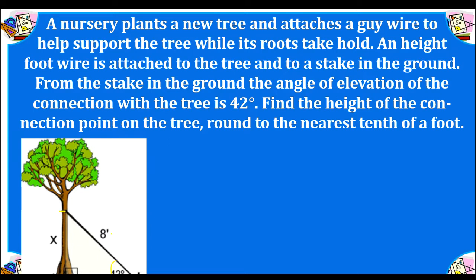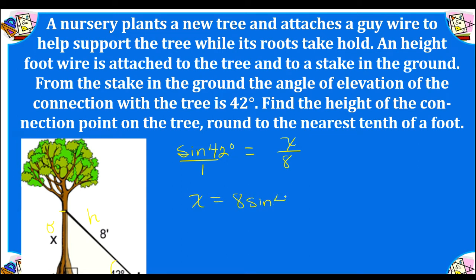Let's decide what trig function to use. This is our angle of elevation — it's our reference point. X is the opposite side and 8 is our hypotenuse. Opposite over hypotenuse is the trig function sine. So the sine of 42 degrees is equal to X over 8. We're going to cross multiply, and X is isolated.